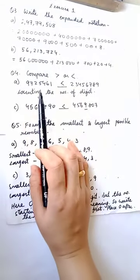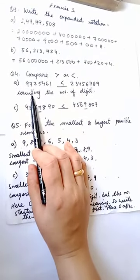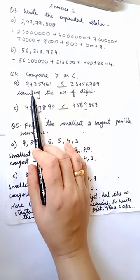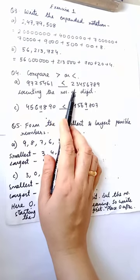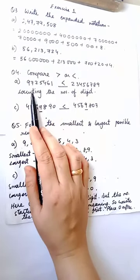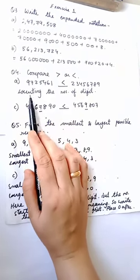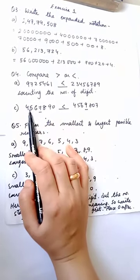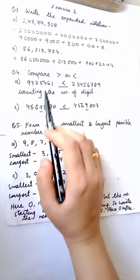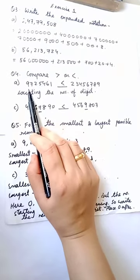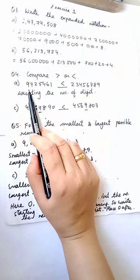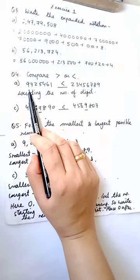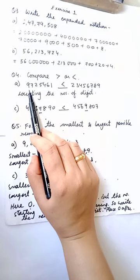Now children, we are going to see question number 4: compare the following numbers by putting the greater or lesser sign. A and C I have done for you. How are you going to see which number is greater or which is the smallest? First, you are going to count the number of digits.